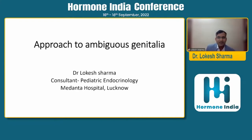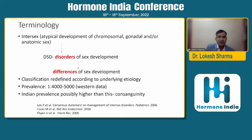So, approach to ambiguous genitalia — ambiguous genitalia is not uncommon in our endocrine clinics. Coming to the terminology: 'intersex' was the term used before 2006 for persons with atypical development of chromosomal, gonadal, or anatomic sex. Since 2006, when a landmark publication came, they used the term 'Disorders of Sex Development.' This was more scientific, and that group reclassified this entity based on the underlying etiology — not randomly as it was earlier.